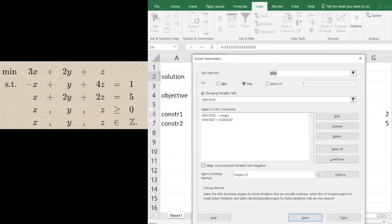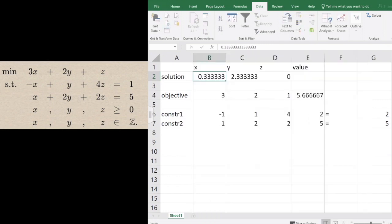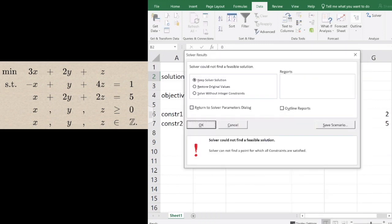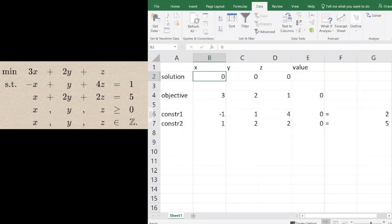Now we have two sets of constraints. We click Solve, and it says it cannot find a feasible solution. There's no feasible solution to this problem.